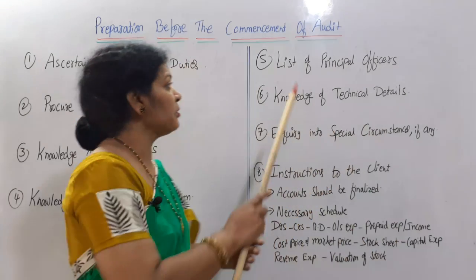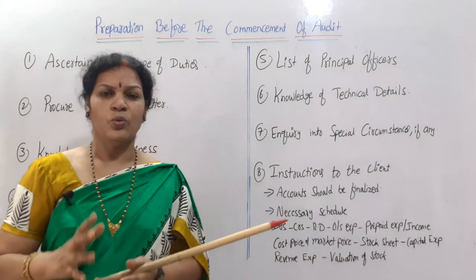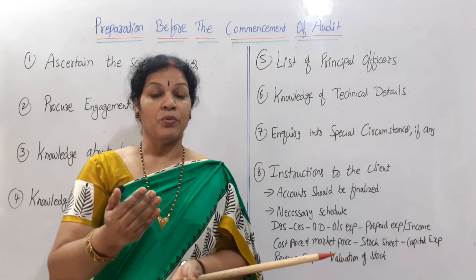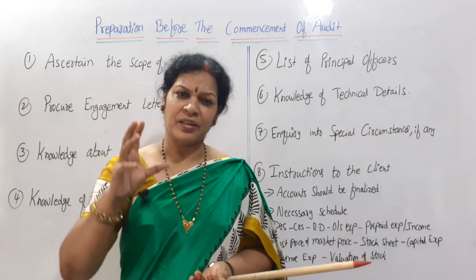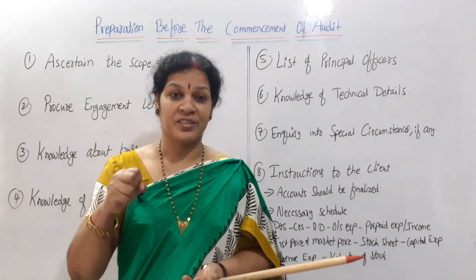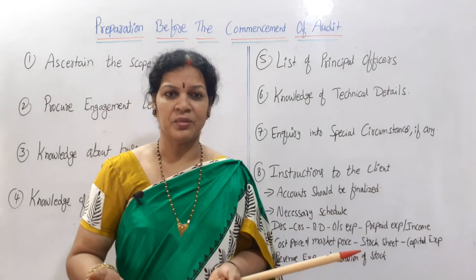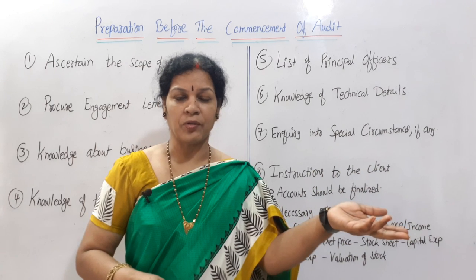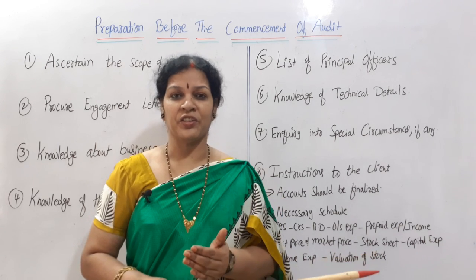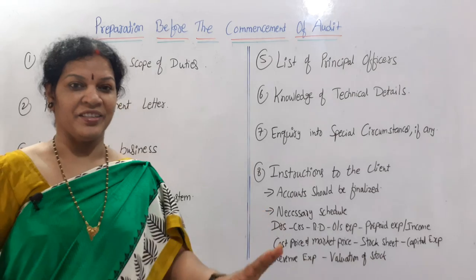Once the fourth stage is completed, the fifth step is to obtain the list of principal officers — who the principal officers of the company are, how many there are, their names, and their contact details. While conducting the audit, if the auditor gets any doubts, he should know whom to contact and where to get the information or clarification. Having this list prepared makes the process smooth and efficient.